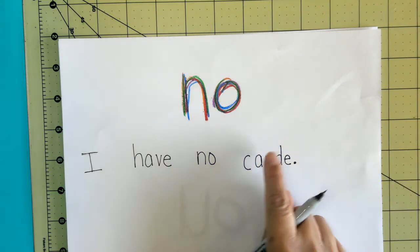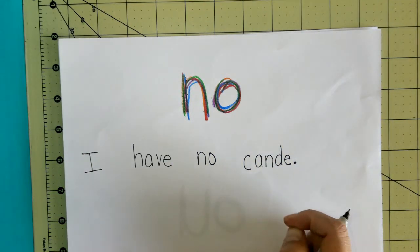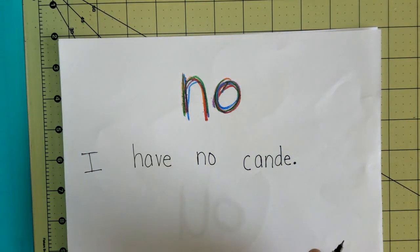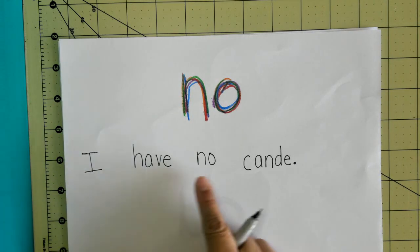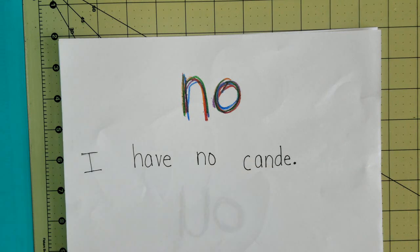Now again, that's not how we spell candy, but we sounded it out, and that's okay. So let's read our sentence together. I have no candy. Very good.